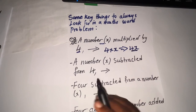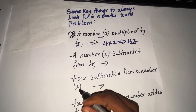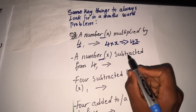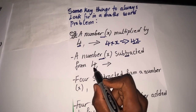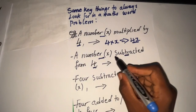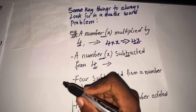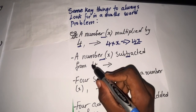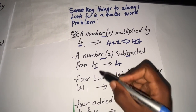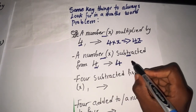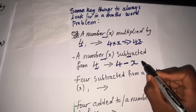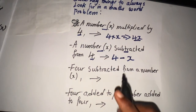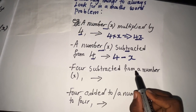That is the analysis for the first one. We move to the second one: 'a number x subtracted from 4.' When a number is subtracted from 4, you write 4 first — because x is being subtracted from 4. Then we write the minus sign and then write that number x. So the answer is 4 minus x. Make sure 4 comes first, then x is subtracted from it.